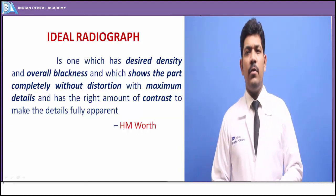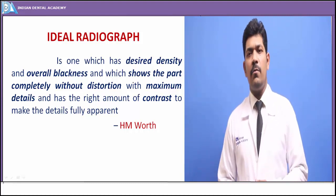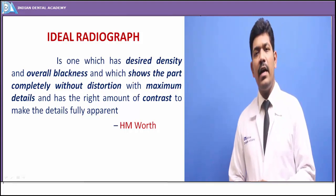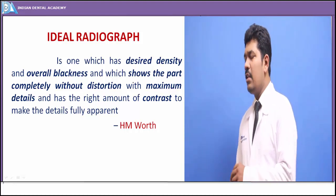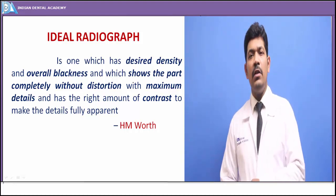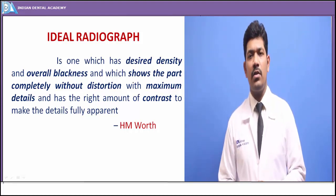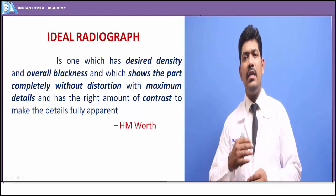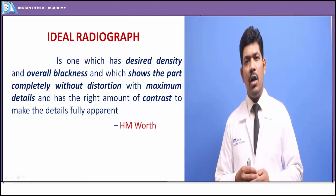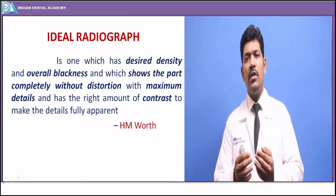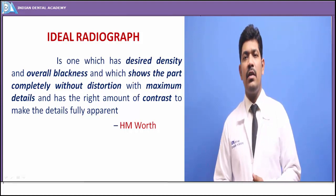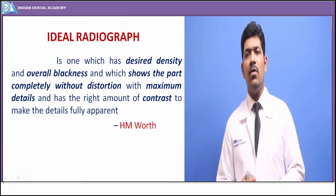What is an ideal radiograph? An ideal radiograph as described by H.M. Worth is one which shows a required density — the overall blackness — that shows a part without any distortion and which shows completely the area of interest along with the surrounding structures. The main idea is to produce a required density, contrast, and the various physical and geometric characteristics so as to see the whole area of interest along with surrounding structures because of the effect of any pathological entity on those areas.